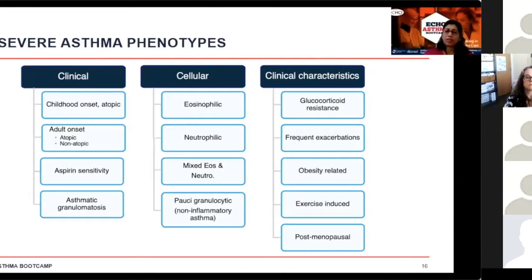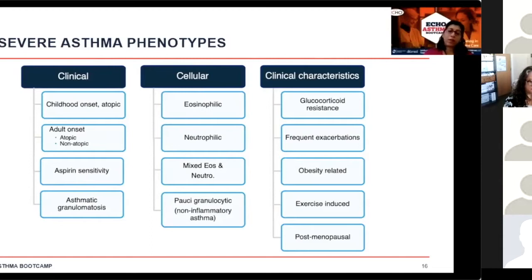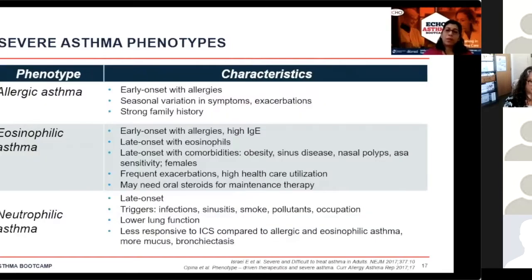Based on clinical characteristics, there are patients who need high doses of steroids and demonstrate glucocorticoid resistance, patients who exacerbate frequently but do well between episodes, obesity-related asthma, exercise-induced asthma, and a subset of women who develop asthma around menopause. Much of this information has come from the SARP — the Severe Asthma Research Program — which studied patients with difficult-to-control severe asthma to understand their characteristics and group them by phenotype.